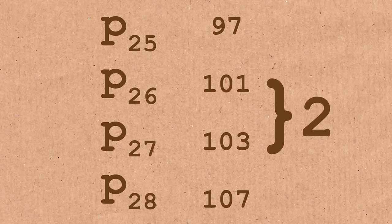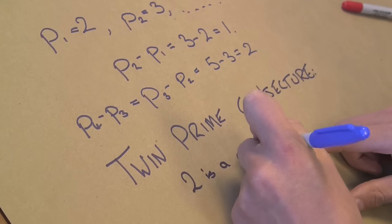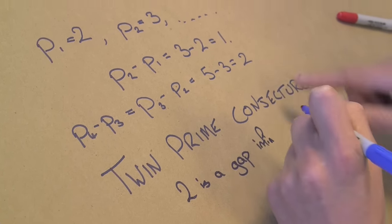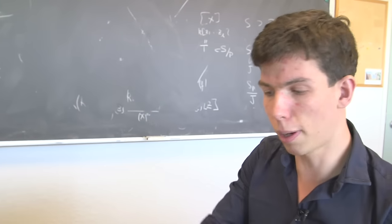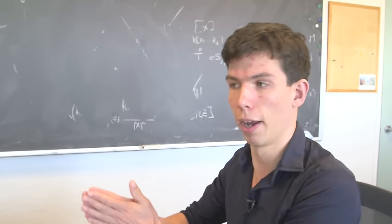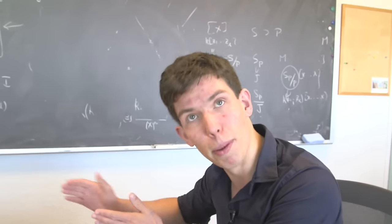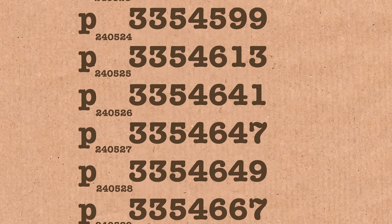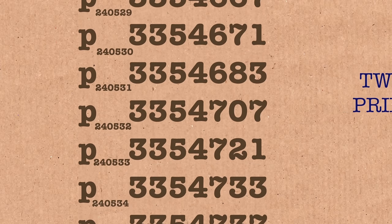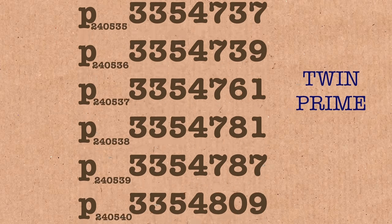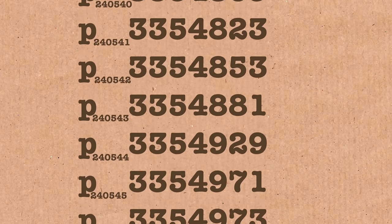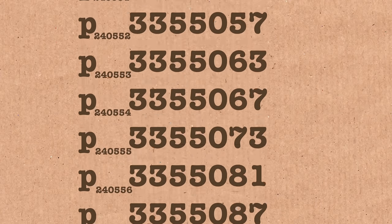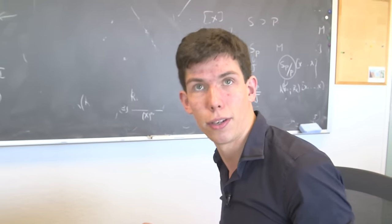The twin prime conjecture says that having two primes which differ by exactly 2 happens infinitely often. If the conjecture was false, at some point you'd go along the number line and all prime gaps would always be bigger than 2. But we don't believe that's the case. We believe the twin prime conjecture is correct, so no matter how far you go there's always going to be some bigger primes, in fact infinitely many, that differ by exactly 2.